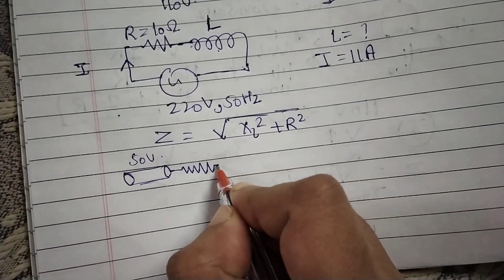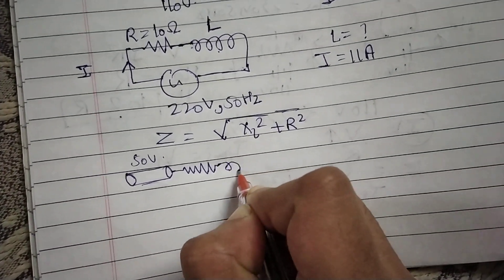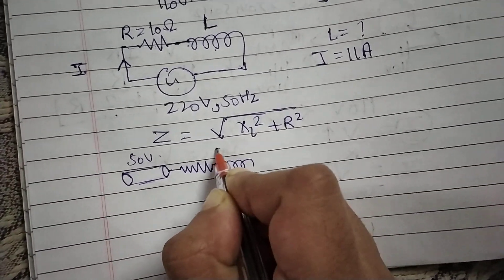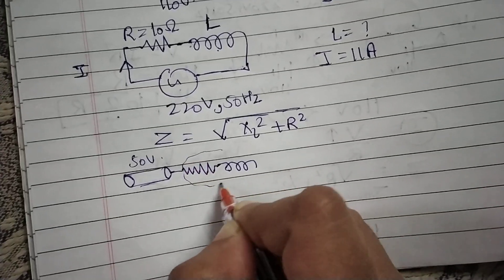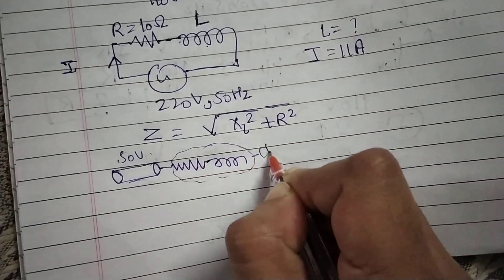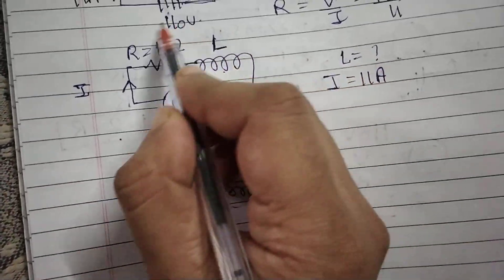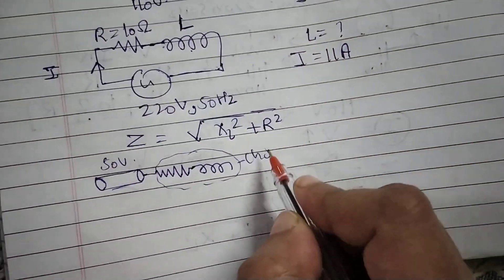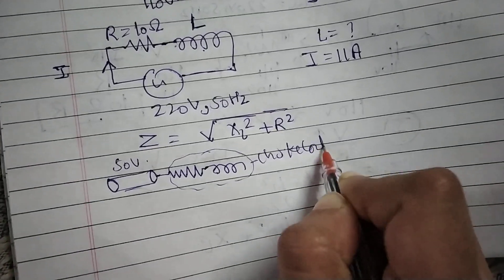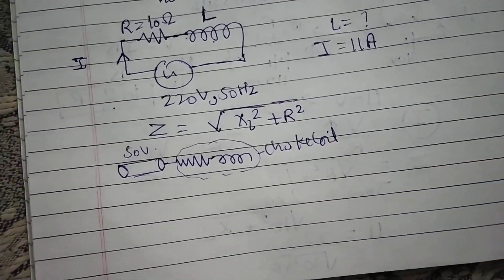If you put only a resistance in series, the power loss will be more. So instead we put a choke coil — a chalk coil — in series. This choke coil is essentially an inductor.